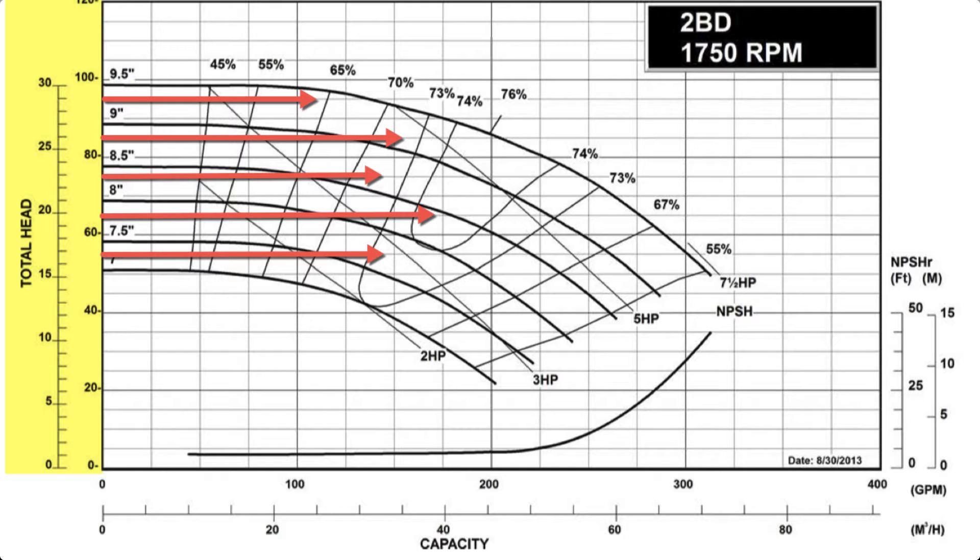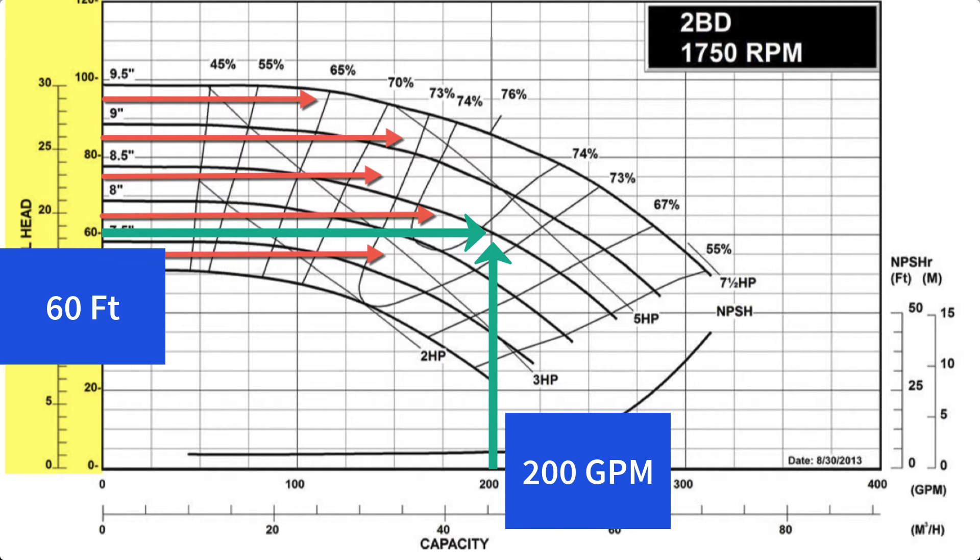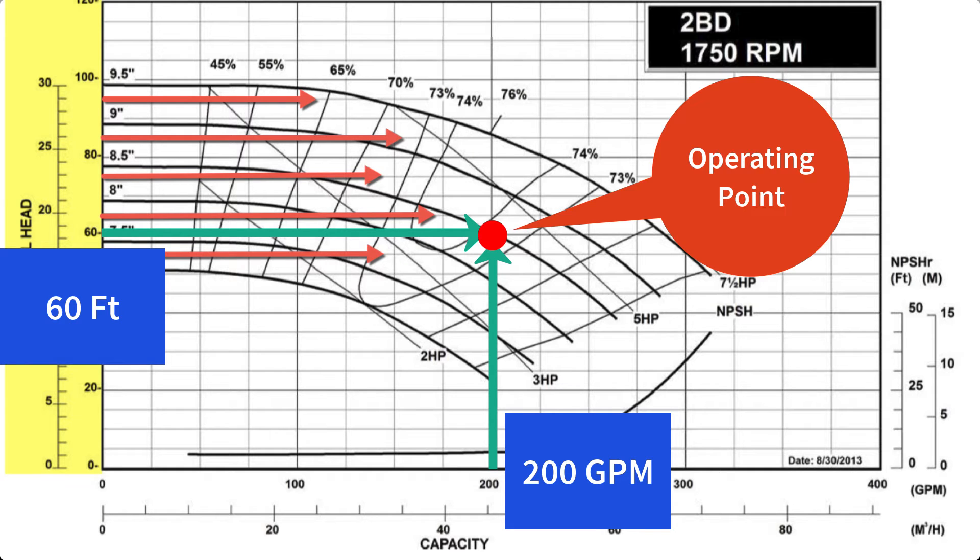The lines for total head run horizontally across the chart. Depending on the head pressure, this particular chart goes from 0 to 120 total head. The head pressure values run on the y-axis along the left hand side of the chart. When selecting a pump you'll use the GPM and the total head as the starting points, and where those two meet, that'll be your operating point.